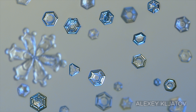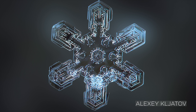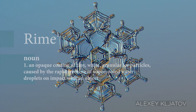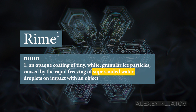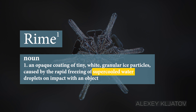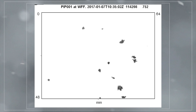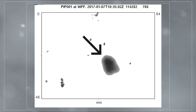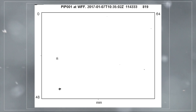It turns out that the degree of riming has a major influence on the melting process. Riming is the accumulation of super-cold water vapor that freezes instantly when it comes in contact with a snowflake. Heavily rimed snowflakes look more like hard, dense ice pellets, while lightly rimed, fluffy snowflakes often maintain their light, delicate crystals.